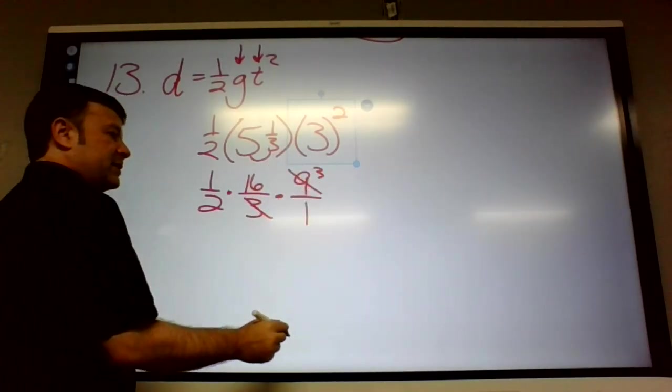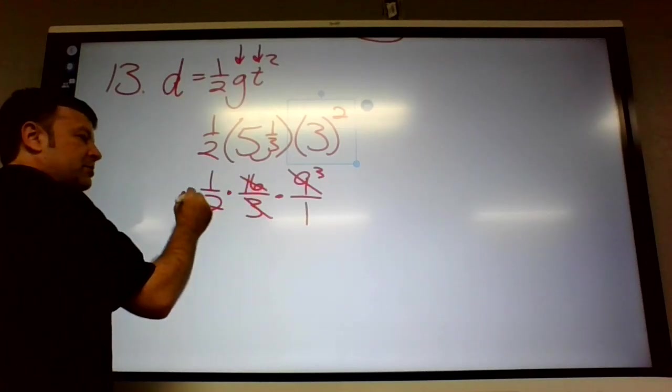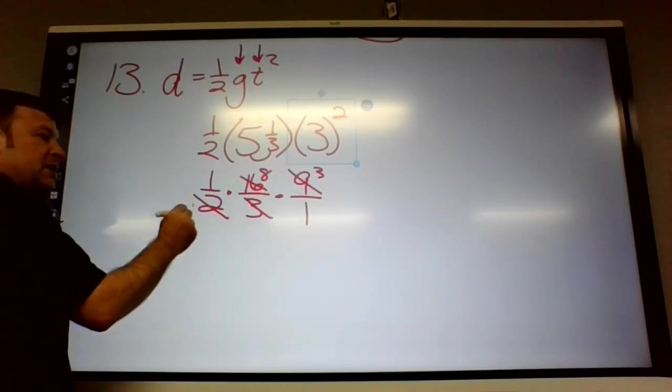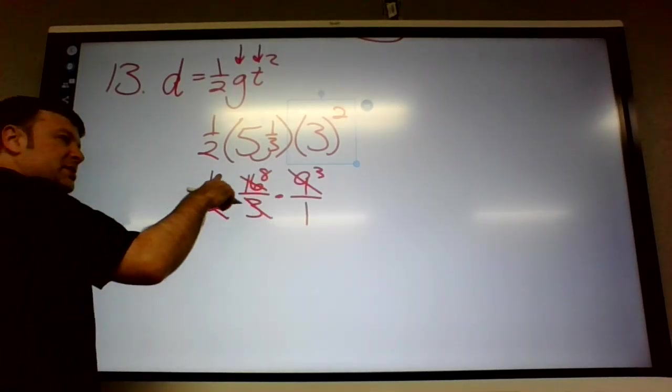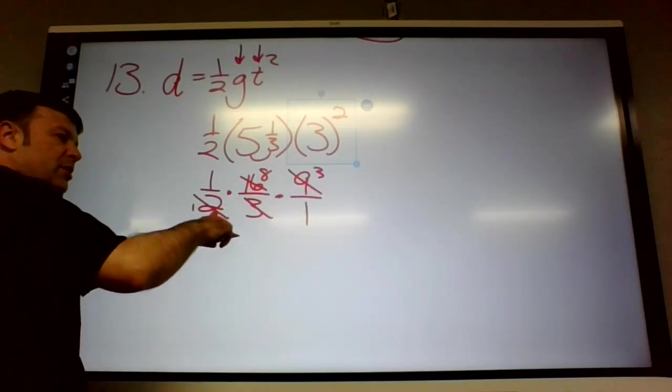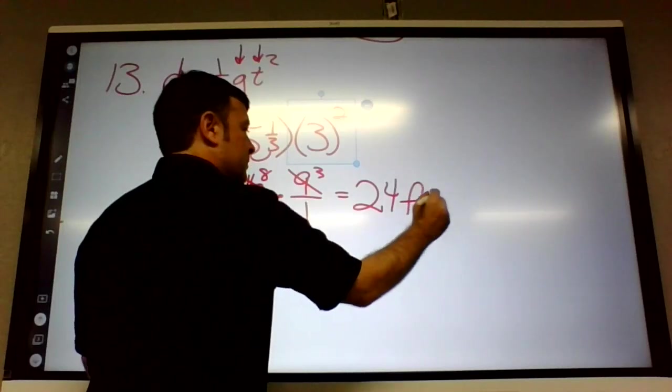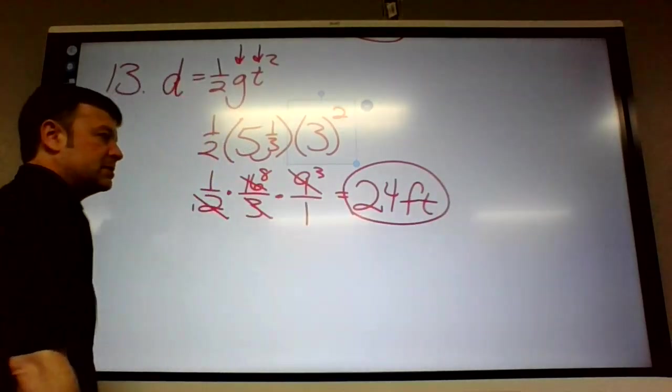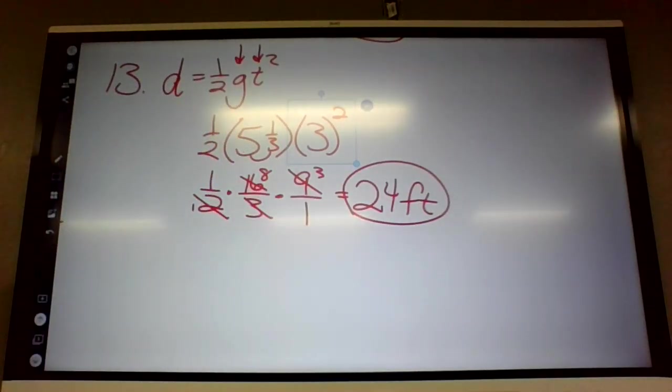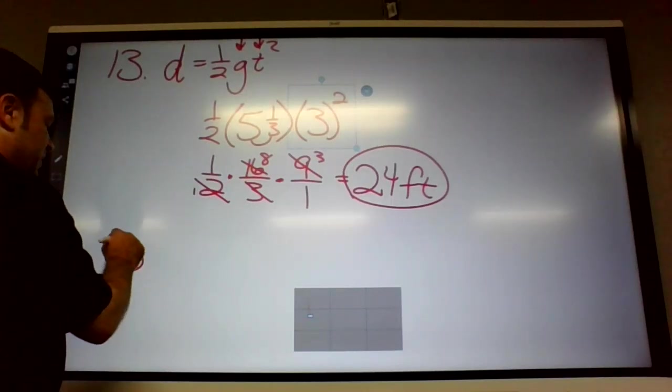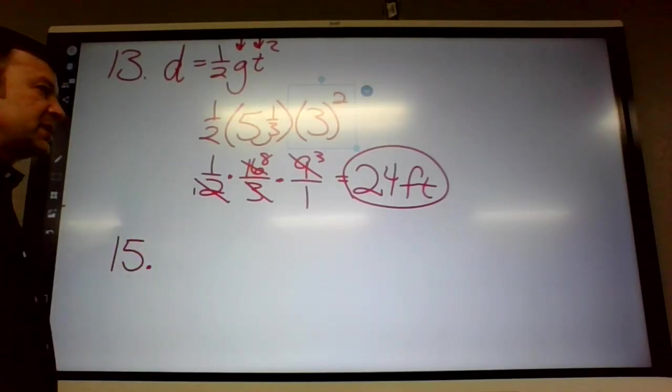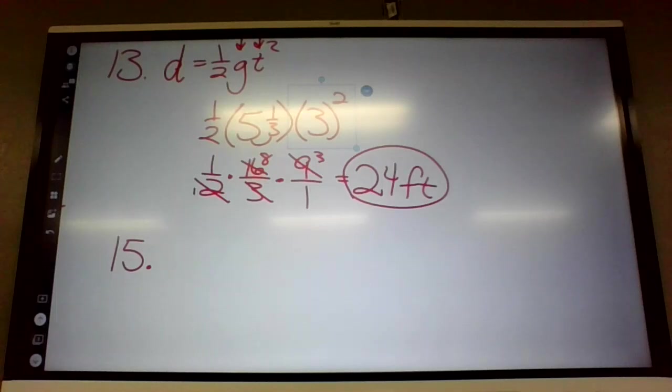And then these reduce. Just because I'm doing it by hand doesn't mean you have to, but sixteen and two reduces to eight. So it's eight times three, twenty-four over one. So it's just twenty-four feet. All right. So it's just plug stuff in. Part of the stuff you plug in is in the directions. It says three seconds in the directions.